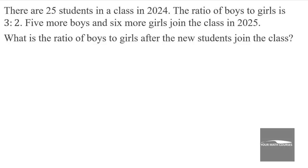There are 25 students in a class in 2024. The ratio of boys to girls is 3 to 2. Five more boys and six more girls join the class in 2025. What is the ratio of boys to girls after the new students join the class? This is testing knowledge on ratio, so let's see how we can solve that.